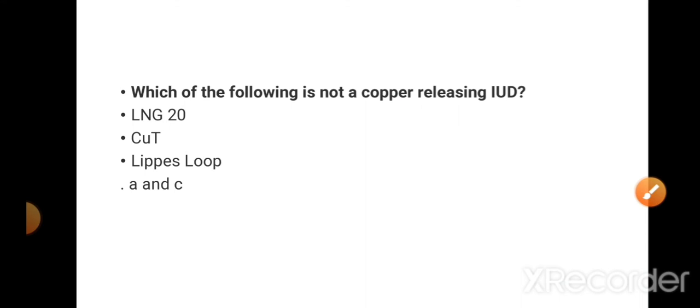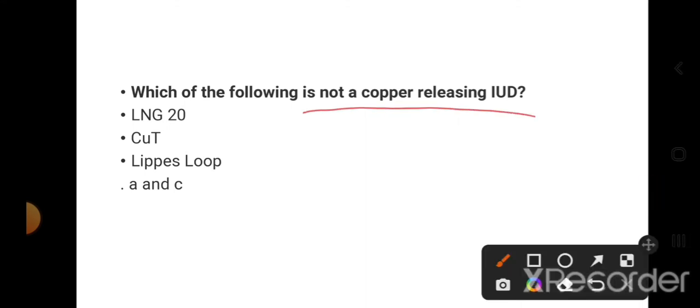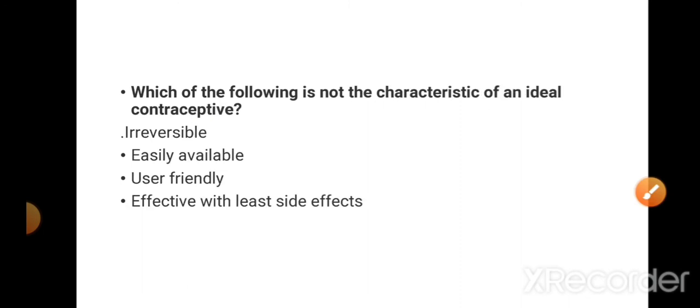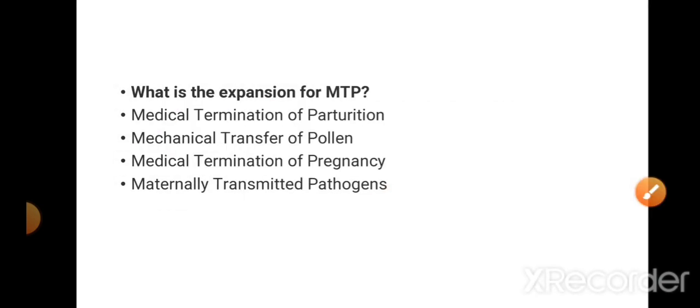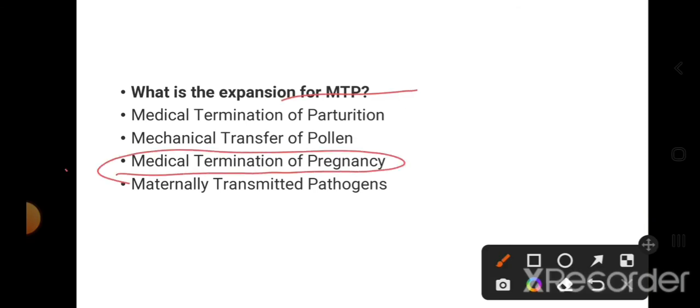Which of the following is not a copper-releasing IUD? Which of the following is not the characteristic of an ideal contraceptive? Ideal contraceptive which is not? Irreversible. Easily available, user-friendly, effective with least side effects - these are characteristics.